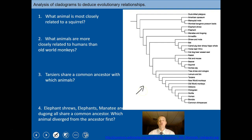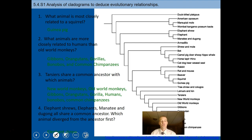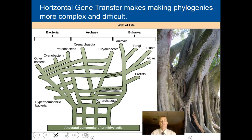Take a minute and answer these questions based on the cladogram. If you can't see it well, look at it on the PowerPoint slide. What animal is most closely related to the squirrel? What animals are most closely related to humans and old world monkeys? Which animal do tarsiers share a common ancestor with? Elephant shrews, elephants, manatee, and dugongs all share a common ancestor — which animal derived from that common ancestor? You should be able to answer these, as I'll have questions like this on the test — asking what things are related, which are clades, which are nodes. There are the answers so you can check your work.